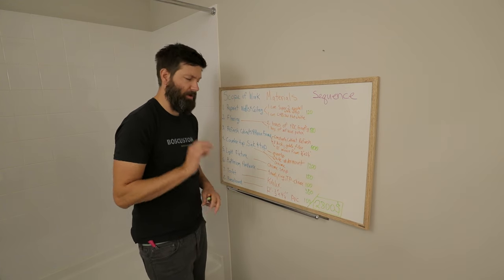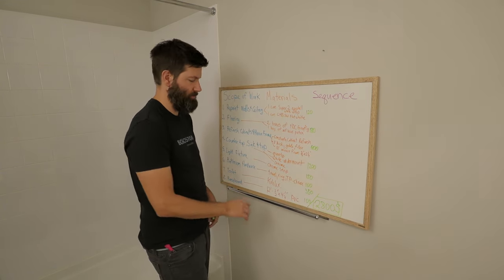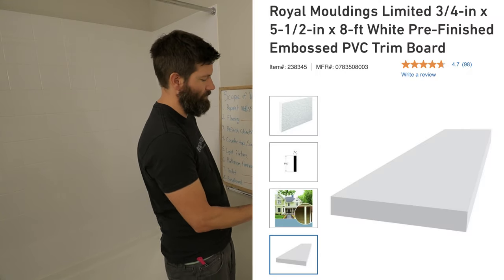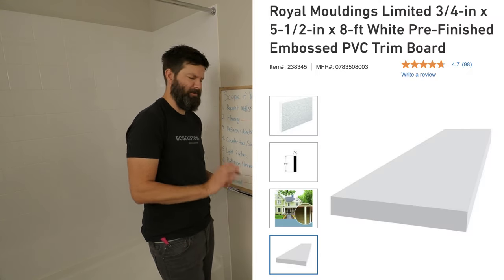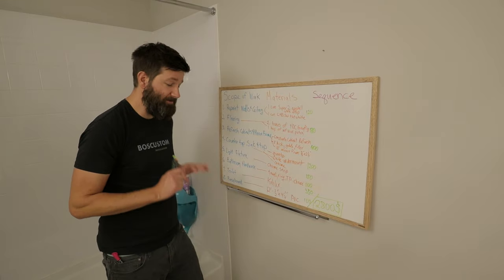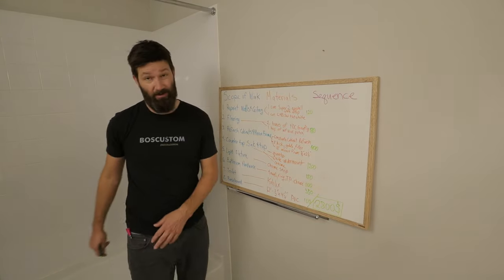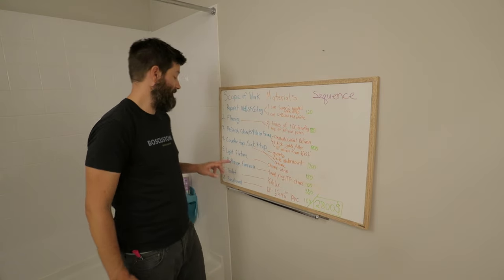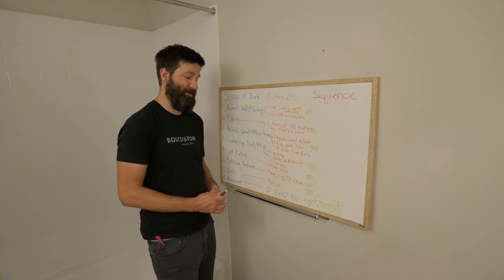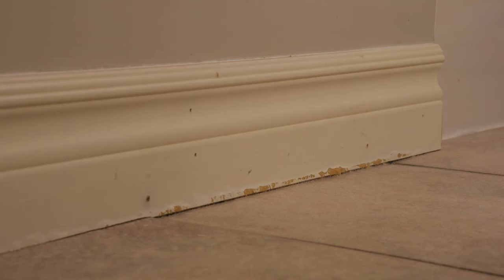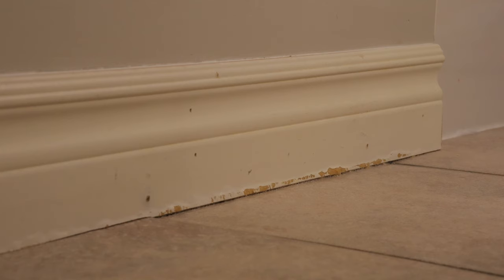And for the baseboards, I'm going to be replacing the existing baseboards with a half by four and a quarter inch PVC flat stock baseboard. I'm going to go PVC in the bathroom just because of any kind of water damage with the bathtub or God forbid that the toilet overflows again. I also have videos on how to fix baseboards that have been damaged by water.